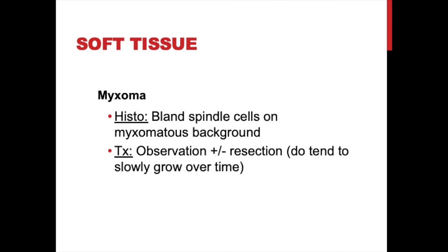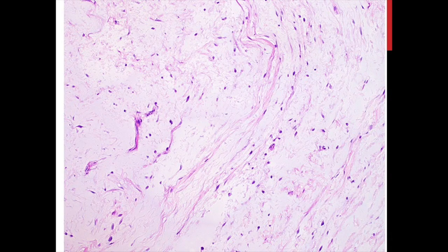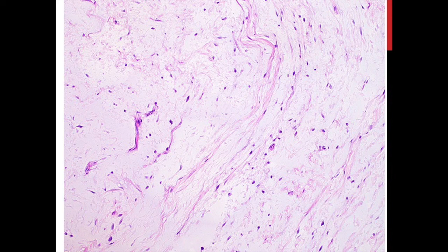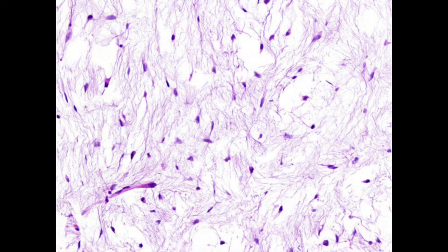Histology shows bland spindle cells on a myxomatous background. Treatment is observation depending on size, symptoms, and patient age, but resection is eventually needed as they slowly grow. The classic myxoma background is important to recognize: it is very hypocellular and very hypo-collagenous compared to other fibrous lesions — that empty space is filled with fluid, explaining the bright MRI signal on fluid-sensitive sequences and the limited gadolinium uptake from the minimal cellular component.